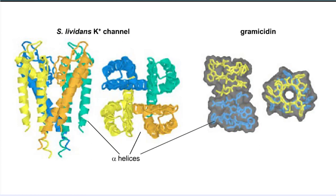Shown here are two different ion channels: a tetrameric bacterial potassium channel and the dipeptide antibiotic, gramicidin.